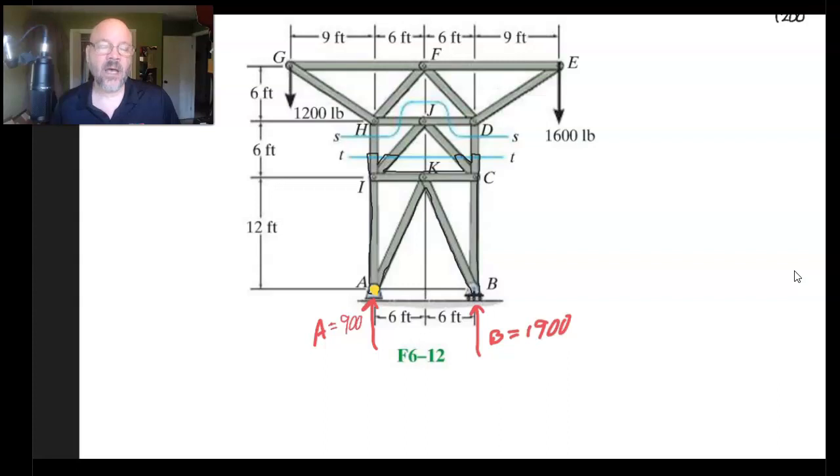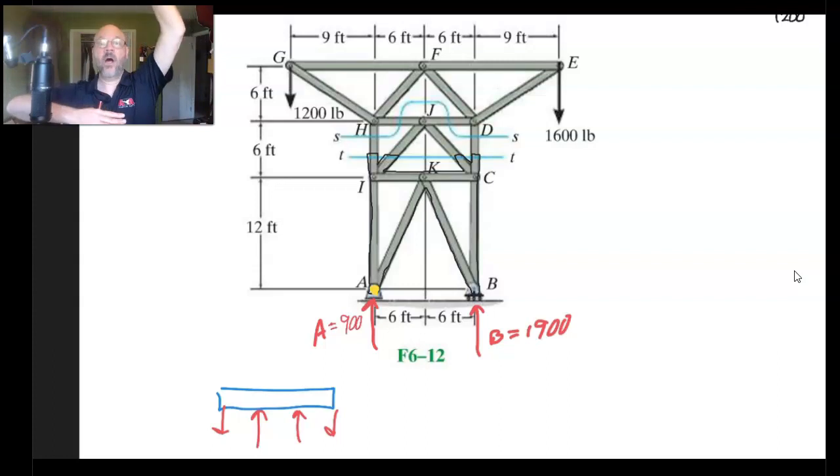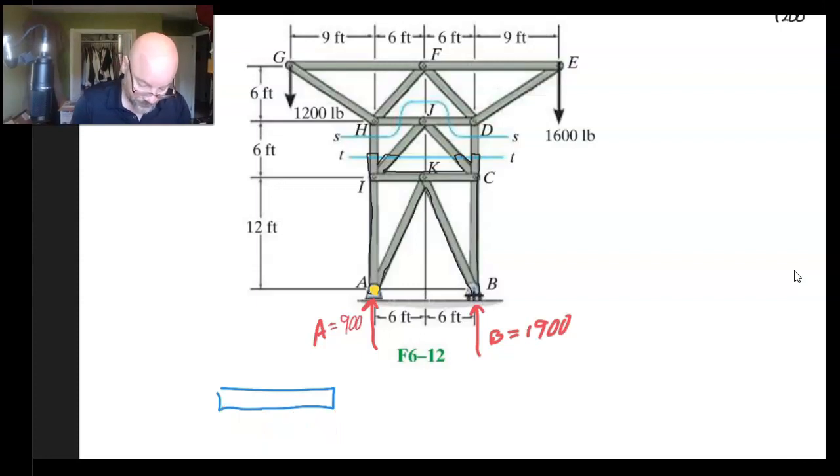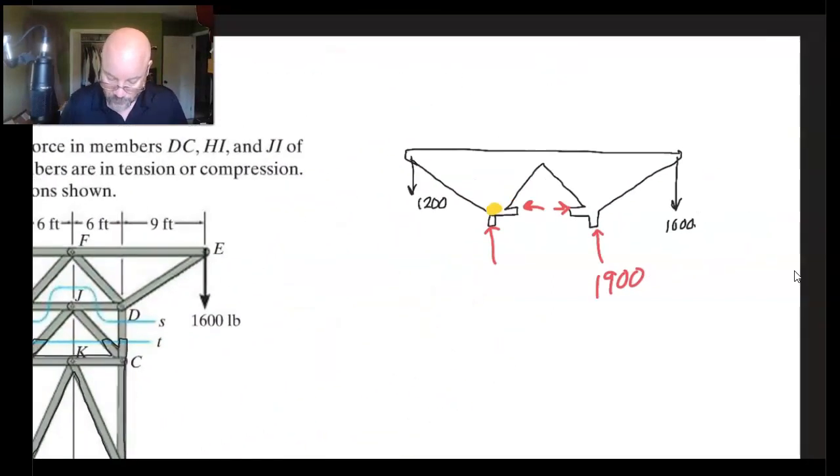From a certain perspective, it's like this whole thing has the 1200, the 1600, the 900 and the 1900. And no matter what happens to it, how tall it is, or how squished it is, we still have the same situation there. So that guy's going to be 1900 and this guy's going to be 900.